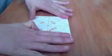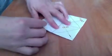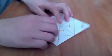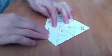You'll have the four corners meeting in the middle. You want to flip this over, this square over. Now you have a smaller square, and you want to do the same thing, but on this side where there's no flaps. You want to create four flaps on this side now by folding each corner to the middle.